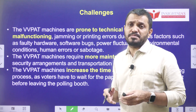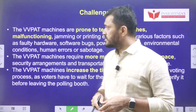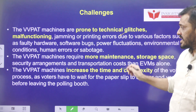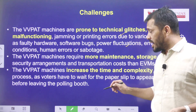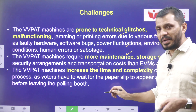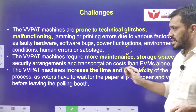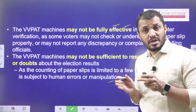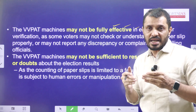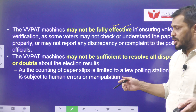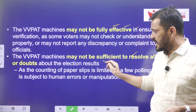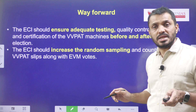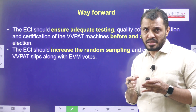The challenges in VVPAT include technical glitches, malfunctioning, jamming, printing errors, and power fluctuations. They require more maintenance compared to EVMs and increase the time and complexity of the voting process. They may not be fully effective in ensuring voter verification because only 5 random VVPATs are used rather than 100% tally, which is what this petition demands. VVPAT may not be sufficient to resolve all disputes regarding election results, as counting of paper slips is limited to only a few polling stations.